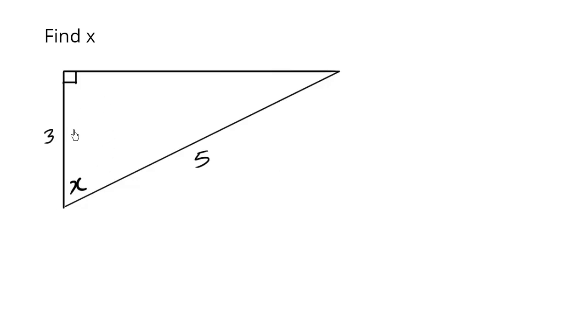So another key concept of trigonometry is to find the unknown angle. We're going to be given two lengths of a side here, three and five.